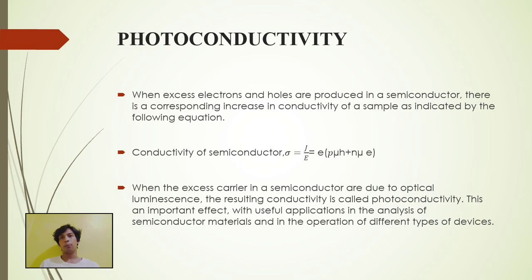For next topic is 22.2, photoconductivity, which is when excess electrons and holes are produced in a semiconductor, there is a corresponding increase in conductivity of a sample as indicated by the following equation. Conductivity of semiconductor sigma zero is equal to J over E equals E of P mu H plus N mu E.